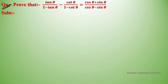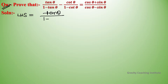Prove that tan theta upon 1 minus tan theta minus cot theta upon 1 minus cot theta equals cos theta plus sin theta upon cos theta minus sin theta. The left hand side, LHS, is equal to tan theta upon 1 minus tan theta minus cot theta upon 1 minus cot theta. We will work on this trigonometric expression.